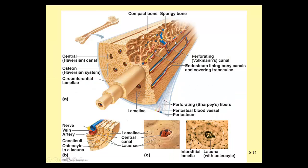Looking at compact bone now: compact bone is solid bone. We don't see the wispy trabeculae — we see solid layers of bone. It is very dense, full of bone matrix with no spaces other than tiny canals where blood vessels and nerves run through the center. If we focus on one of these circular pieces found at the edges of long bones, the entire unit of circular layers is called an osteon.